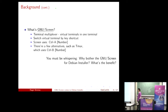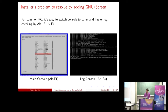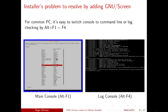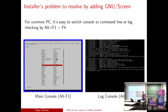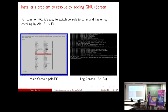You must be thinking: why do we need GNU screen in the Debian installer? What's the benefit? Let me show you the normal installer. We have the UI, and if we encounter a problem such as partitioning or creating a new disk image and want to check the logs, we can press Alt+F4 to switch to the log console. For the normal PC case we can press Alt+F1 to switch back.